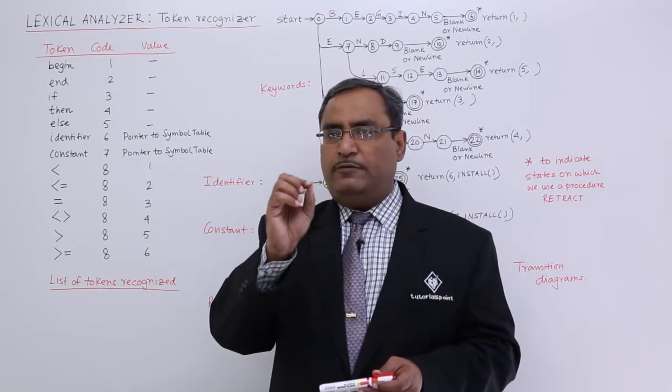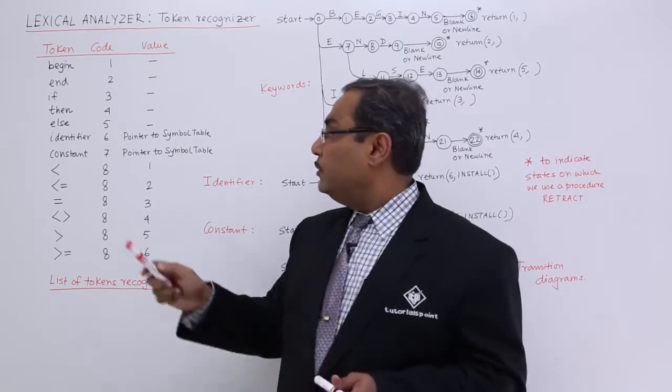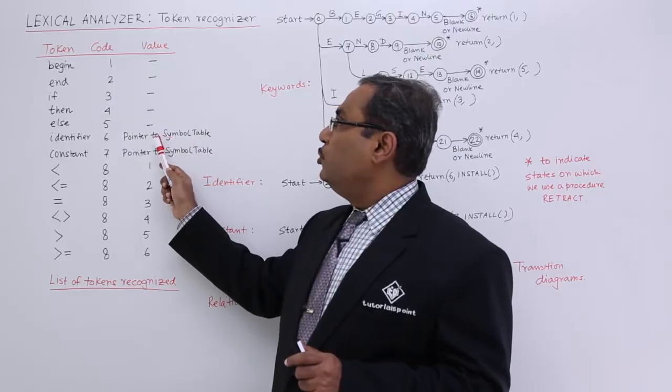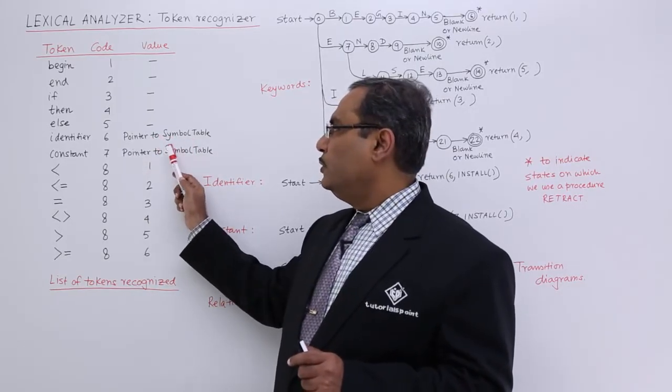That means if it recognizes one variable or identifier, then it will be registered on the symbol table. So pointer to the symbol table will be the value, and pointer to the symbol table will be written here.